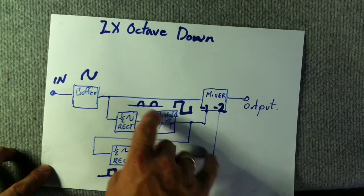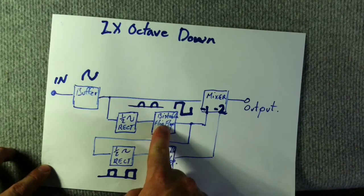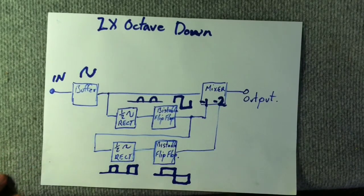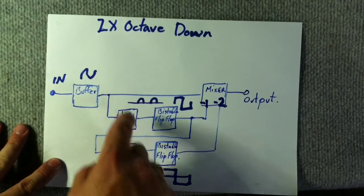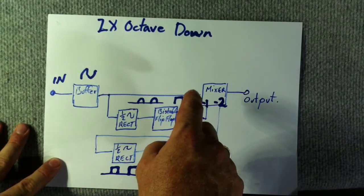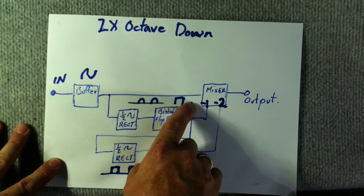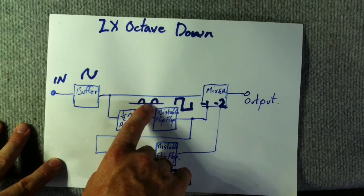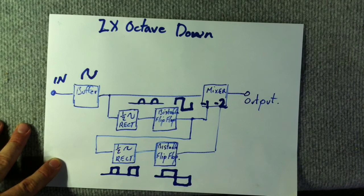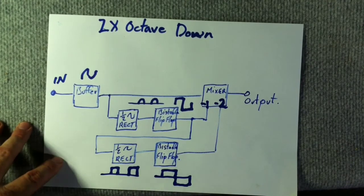We're going to use that signal to trigger this bistable flip-flop which is going to be made out of a 555 timer. So with each hump it'll go positive one way and then the next hump it'll go negative. And we'll end up with a square wave signal like this that will be twice the period of this one, which means it'll be half the frequency, which means an octave down.